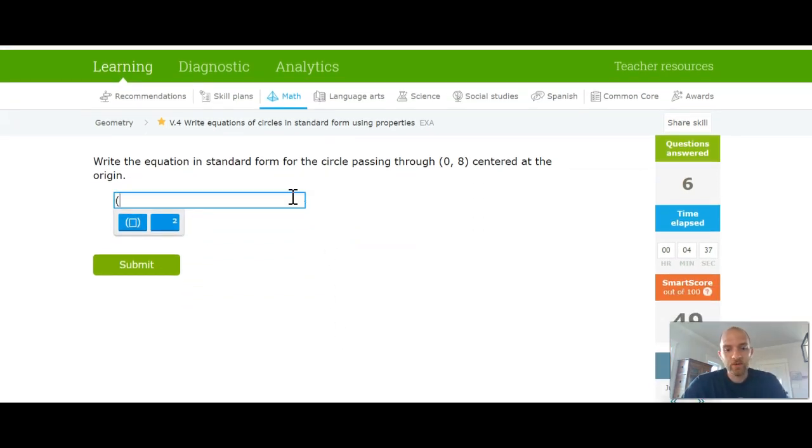All right. So we've got a center at 0, 8. So that would be x minus 0 this time squared plus y minus 8 squared is equal to... Oh, my apologies. It's centered at the origin. So that would just be y minus 0 squared. And I'm writing it like this on purpose just to see if iXL will take it because technically this isn't wrong.